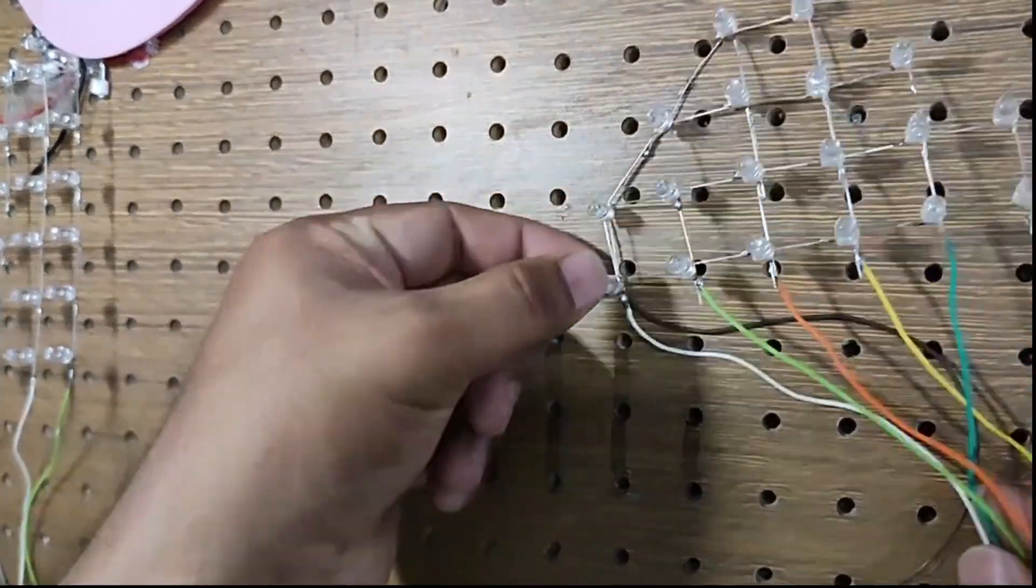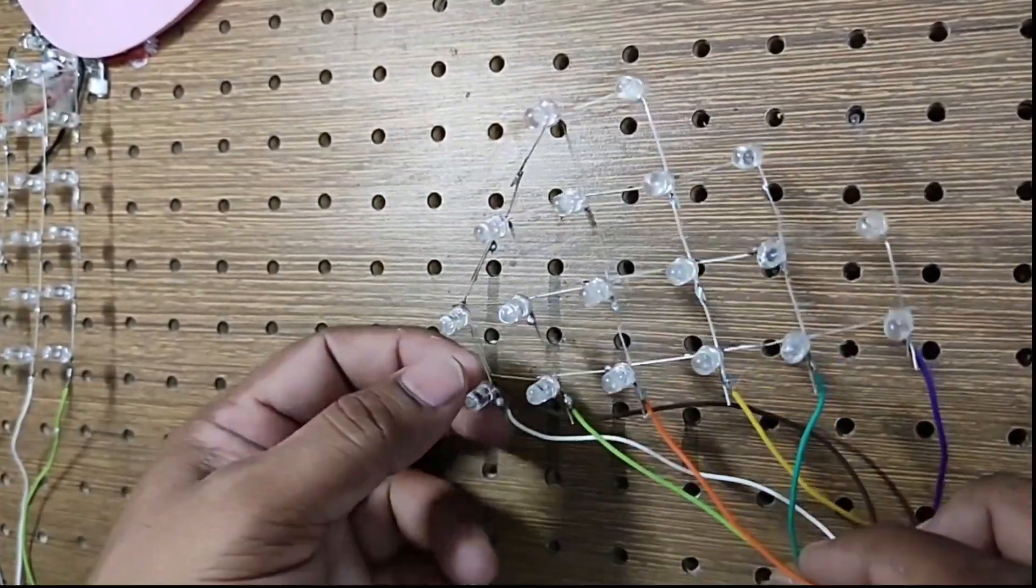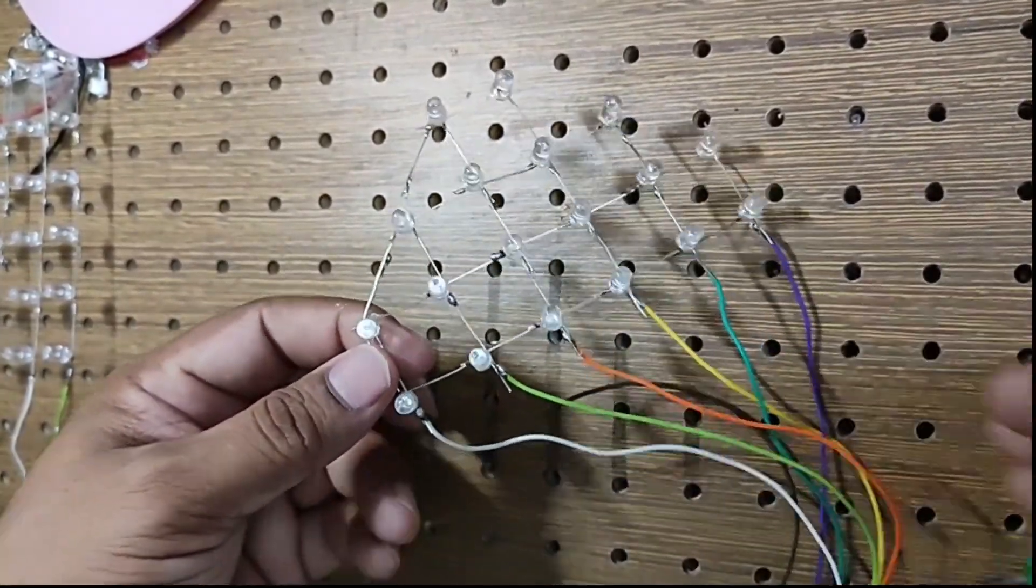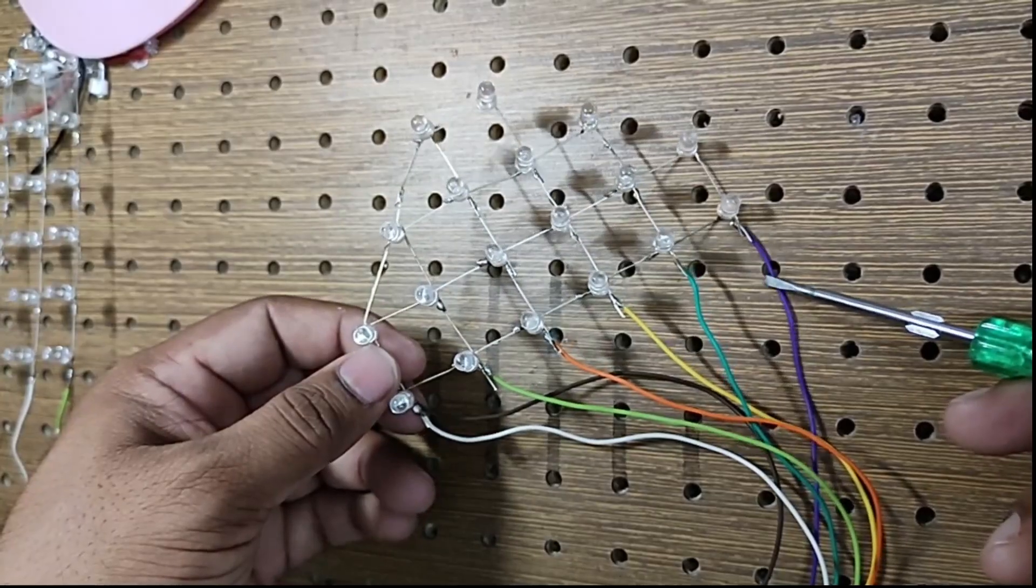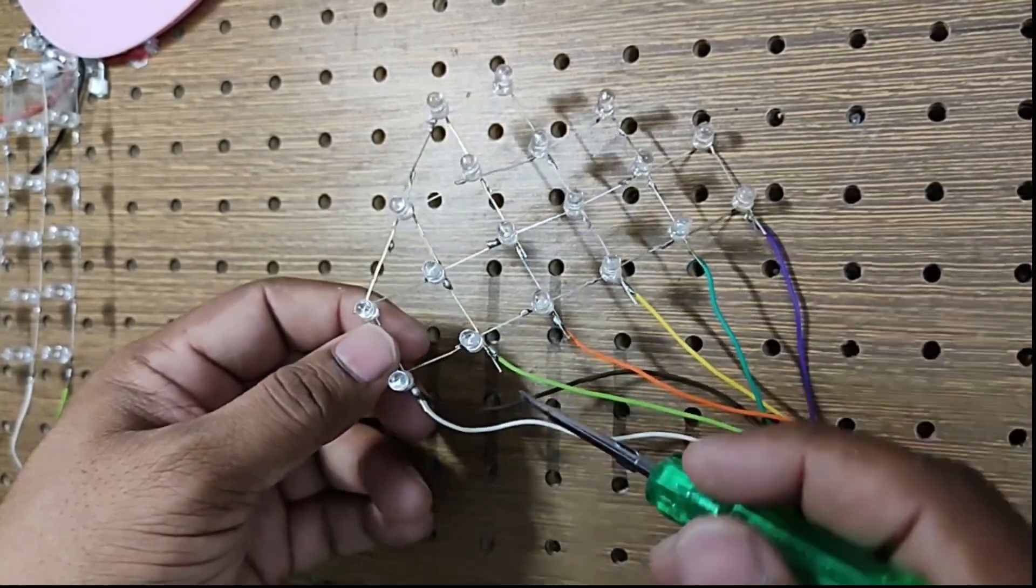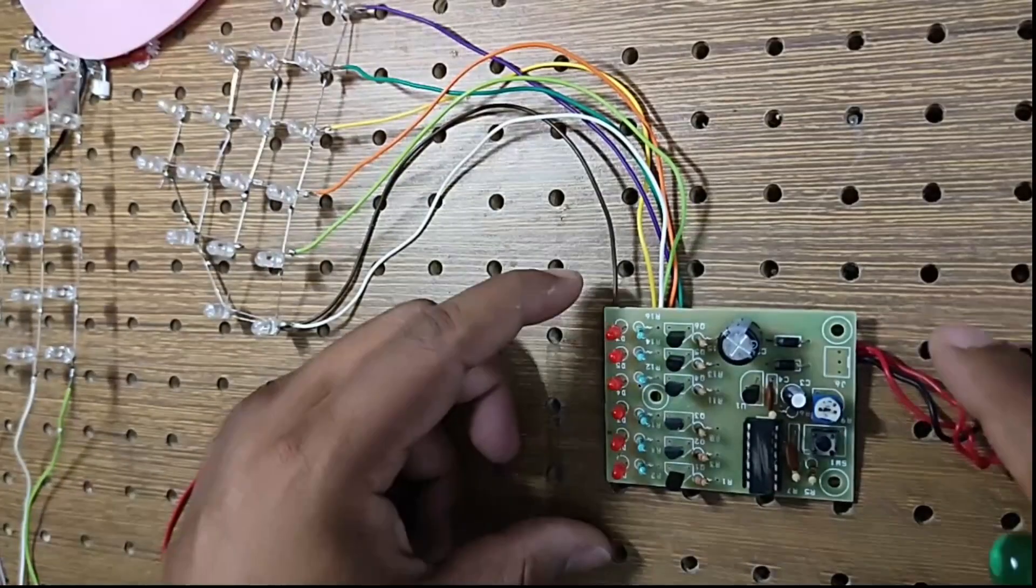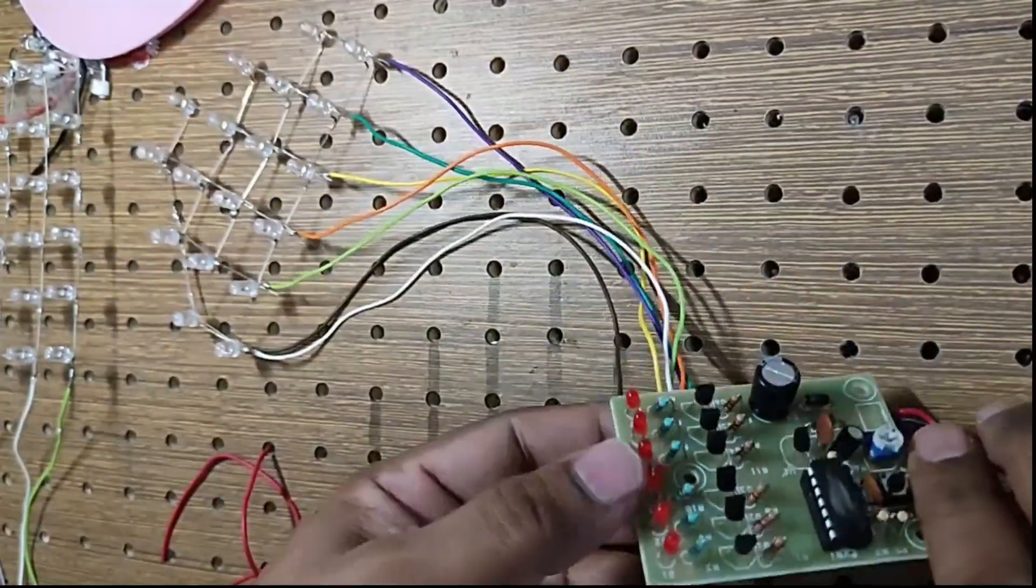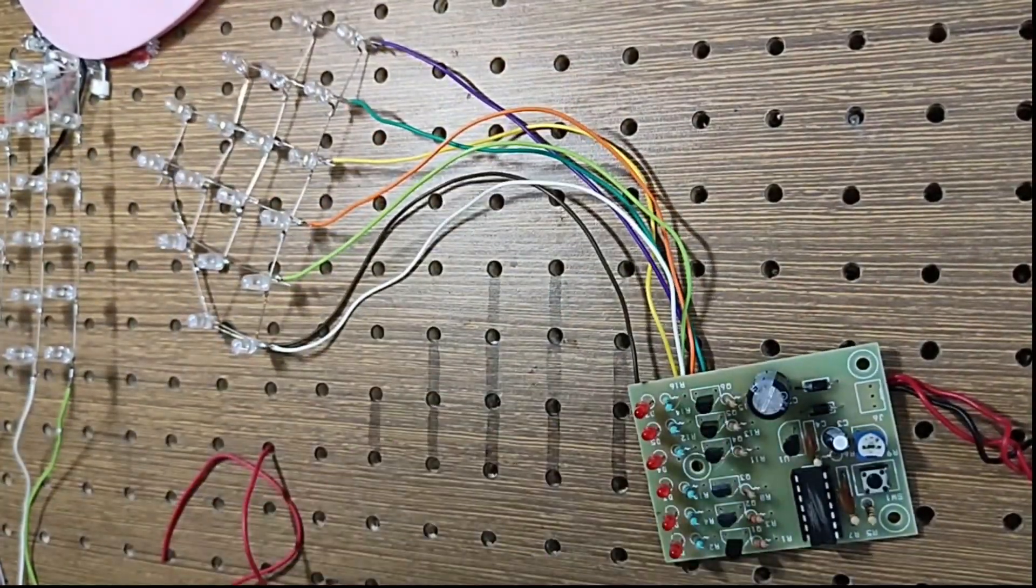I am finished with all the soldering. I've connected all six channel wires—one, two, three, four, five, six—and one ground. I've connected them to all the circuitry at the back side to the transistor loads.